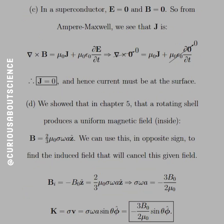Now part C, now we get to have some fun. In the superconductor, what we see is that E equals 0 and B equals 0. So from Ampere-Maxwell, what we see is the curl of B equals μ₀J plus μ₀ε₀ ∂E/∂t. But again, if E and B are 0, then both the curl and the time derivative go to 0 as well.